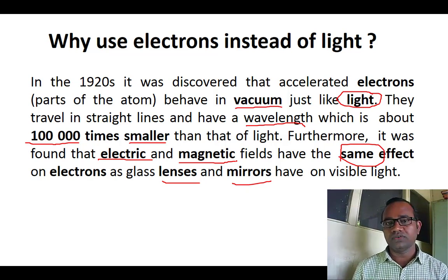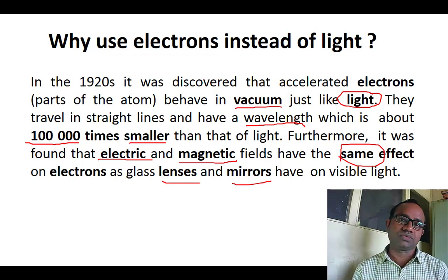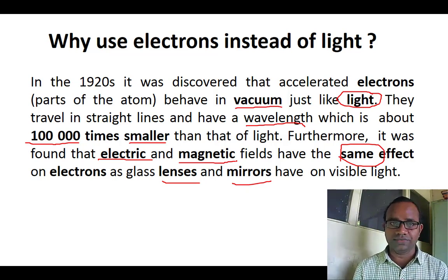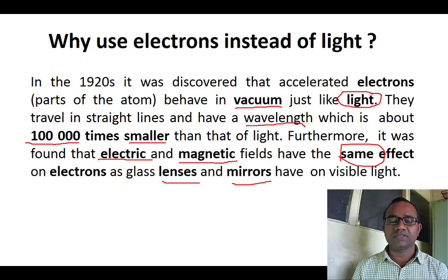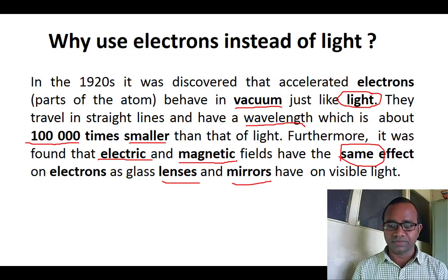Electrons are more preferred over light because of their very much smaller wavelength. Electrons can behave the same as light because the effect of electric field and magnetic field is the same on light as well as on electrons. Therefore, electrons can be used in place of light — these are the factors why we use electrons instead of light.